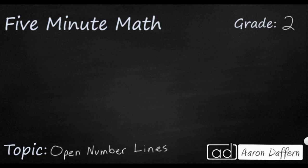So this is an open number line. It's a number line that's got nothing on it. Most number lines have little tick marks and already have some boundary numbers on them. Open number lines start with nothing, and they're useful because students can use them to solve a variety of problems.